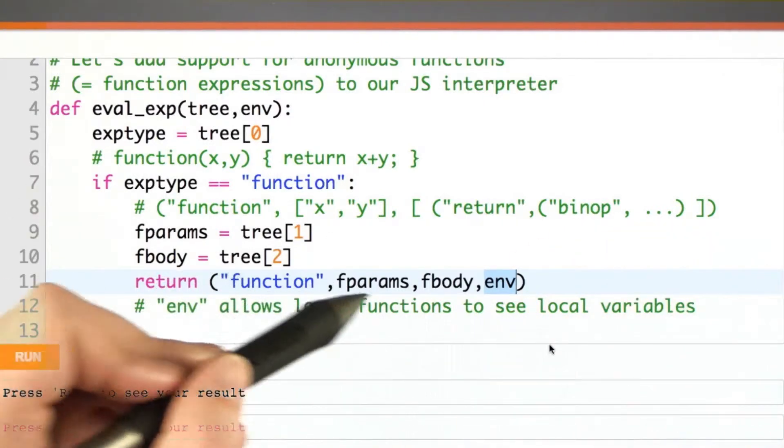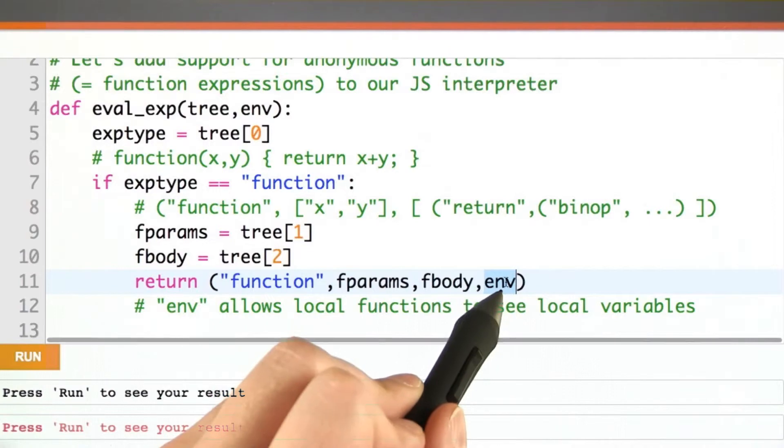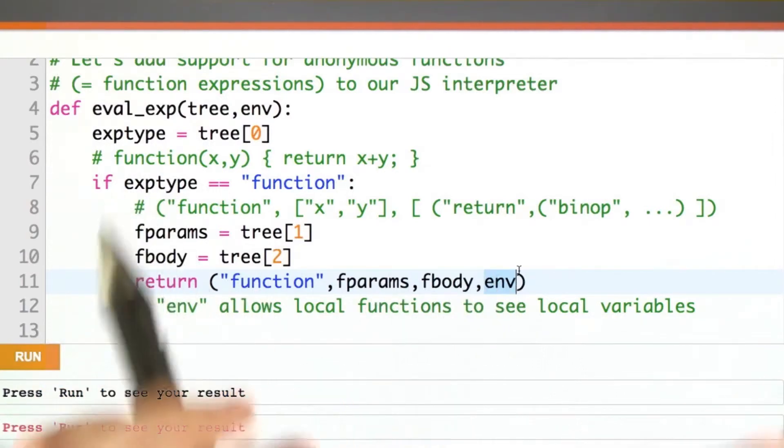This is why things like make greeter work. They can refer back to variables that were currently in scope when they were defined.